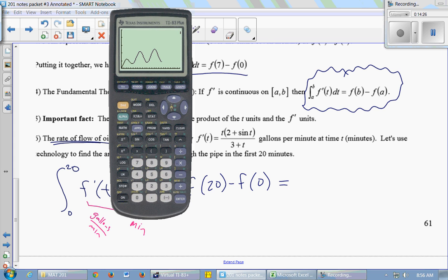So I'm interested in the area under this curve from 0 to 20, first 20 minutes. So that's in the calculate menu, second trace. And number 7 is integral. And it asks for a lower limit, 0, upper limit, 20.